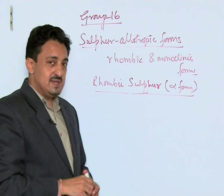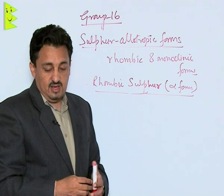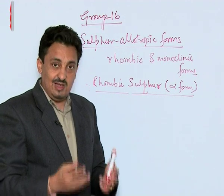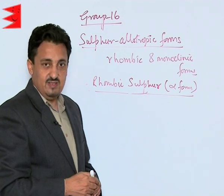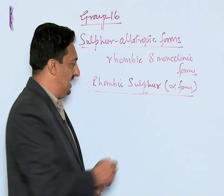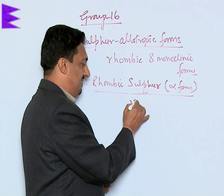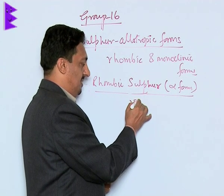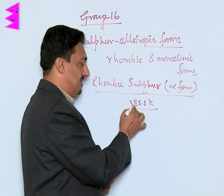Rhombic Sulphur is a yellow colored solid whose melting point is approximately 385.8 Kelvin.